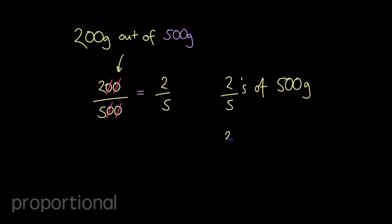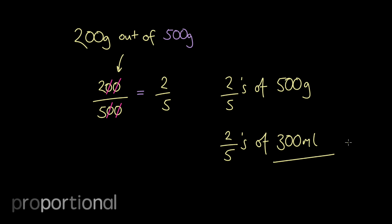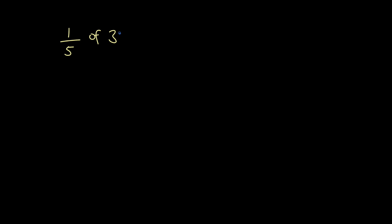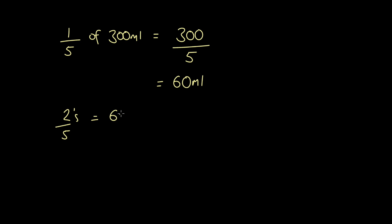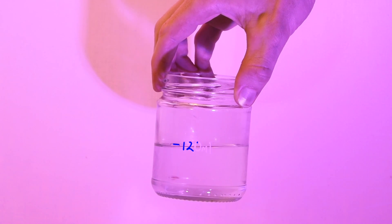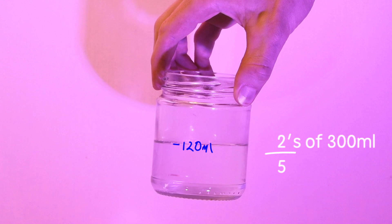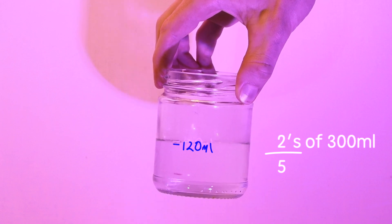Because the amounts are proportional to one another, it means I need to find out what two-fifths of 300 millilitres of water is. I can find one-fifth of 300 millilitres by dividing by five, which is 60 millilitres. So twice that amount, or doubling 60 millilitres, tells us that we need 120 millilitres of water, which is two-fifths of 300 millilitres.